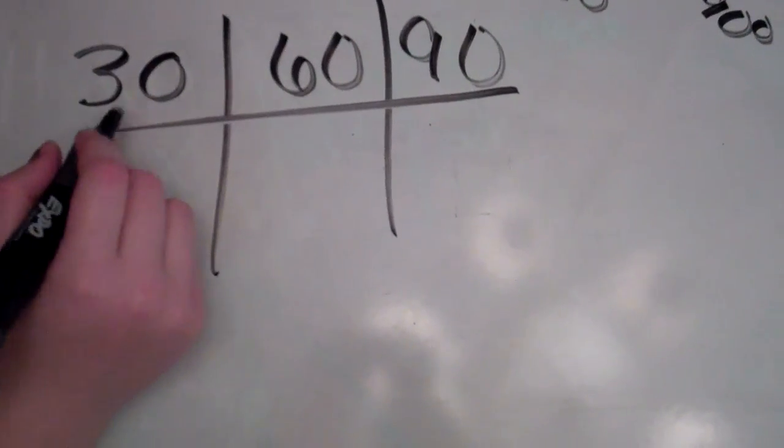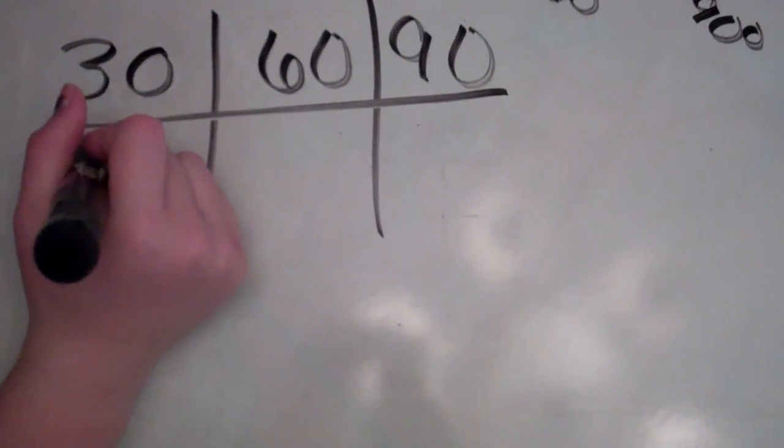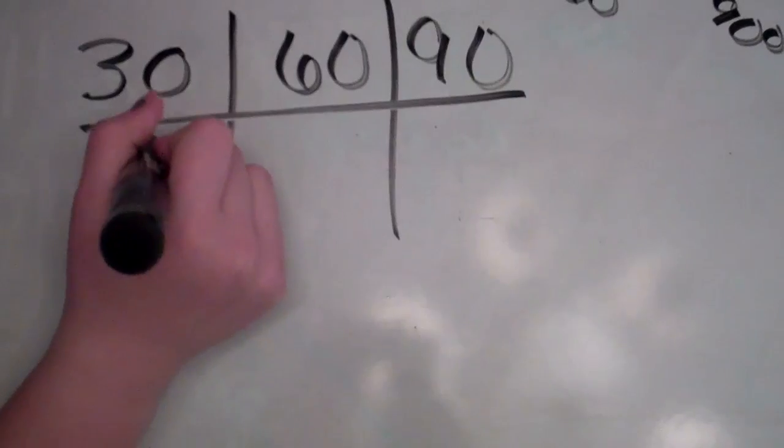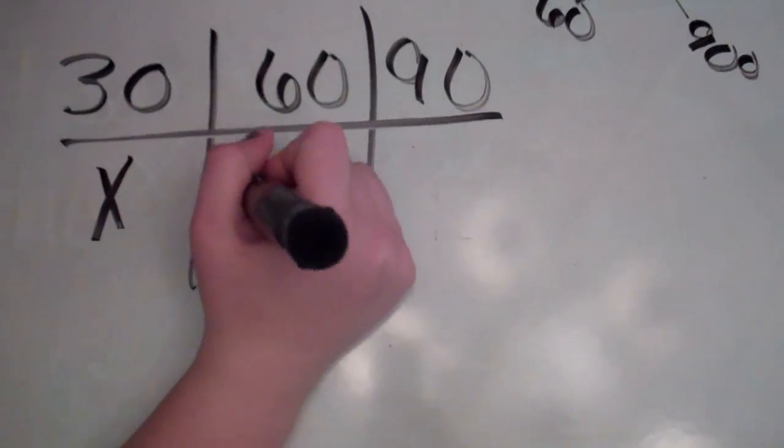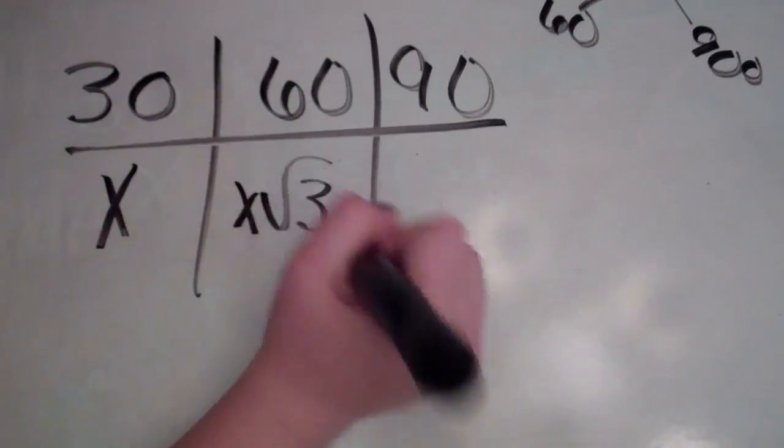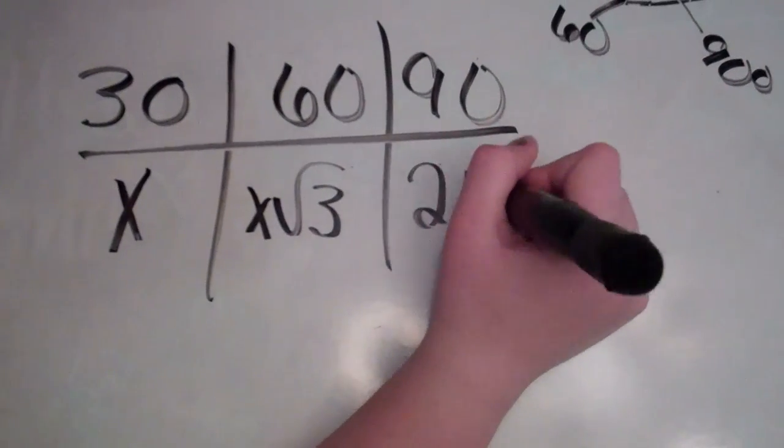Opposite of the side, opposite of the 30 degree angle, the side is x. Opposite 60 is x square root of 3, and opposite 90 is 2x.